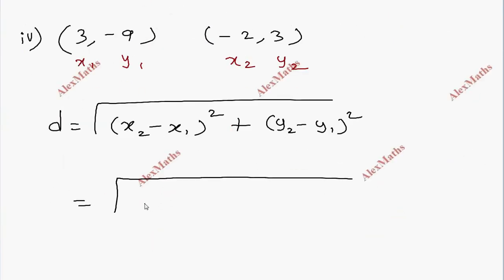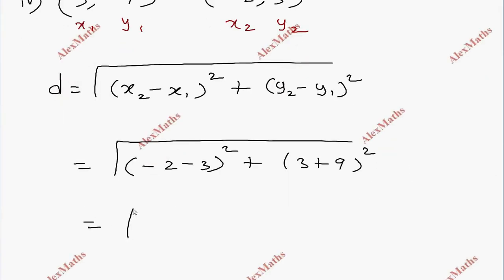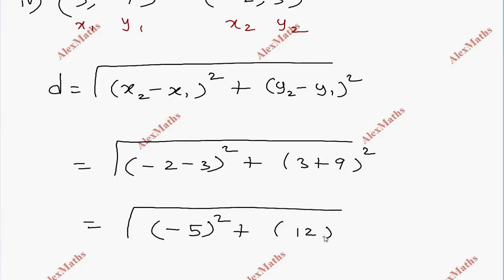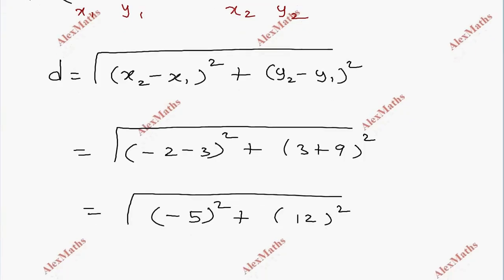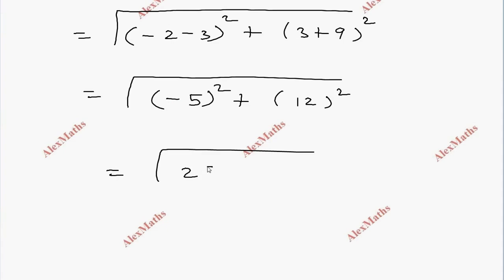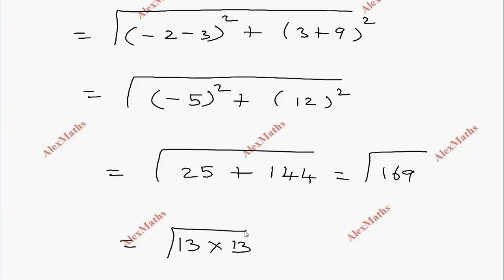So we compute the square root of (-2 minus 3) whole square plus (3 minus (-9)) whole square, giving us the square root of (-5) whole square plus 12 whole square. Minus 5 squared equals 25 and 12 squared equals 144. So this is the square root of 169, which is the square root of 13 times 13, giving us 13 units.